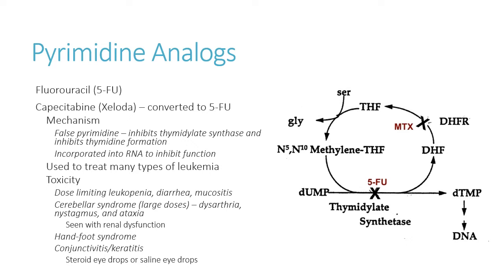Regarding whether pyridoxine (B6) helps with 5-FU neuropathy as it does with isoniazid — unfortunately no, we don't see the same benefit. With methotrexate you can give folic acid or the active form to prevent some adverse effects, but not with 5-FU. When you see neuropathy develop, you want to stop the drug and switch to a different regimen. Roadmaps often include addenda indicating: if this toxicity develops, switch to this alternative regimen or alter the dose.